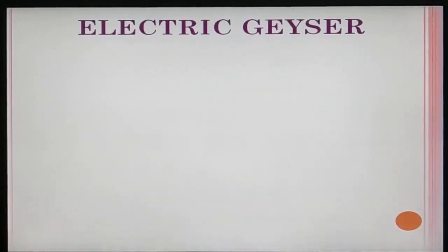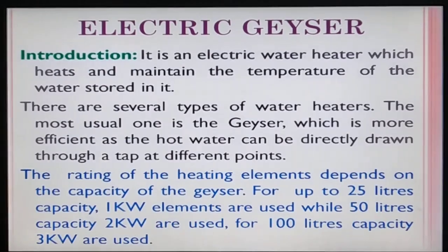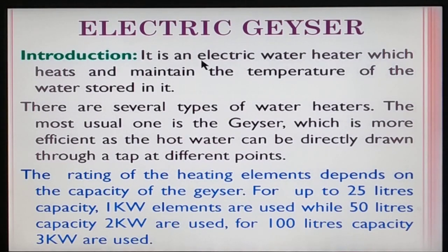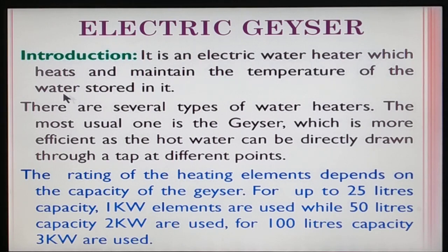Next is the electric geyser. The electric geyser has two types: the storage geyser and the instant geyser. In the storage geyser, there is a water heater — the temperature of the water is maintained and stored. The storage geyser stores heated water.